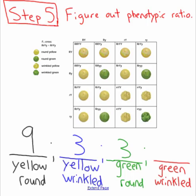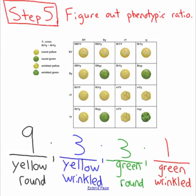Finally, green wrinkled is recessive for both seed shape and color, so we need to see little r, little r, little y, little y. There is only one of those. So our ratio is nine to three to three to one. That is how you do dihybrid crosses. This has been a bit of biology with Mr. Rock, and I'm signing off.